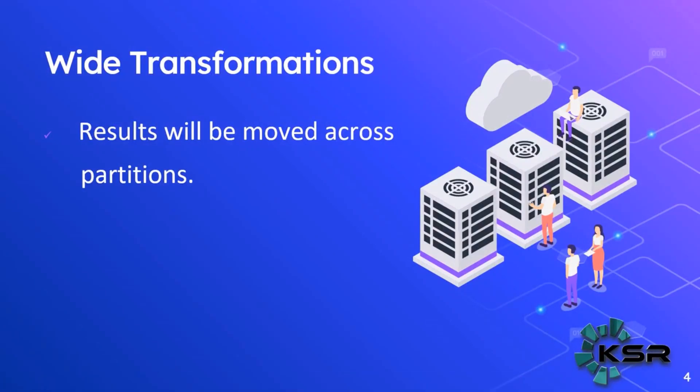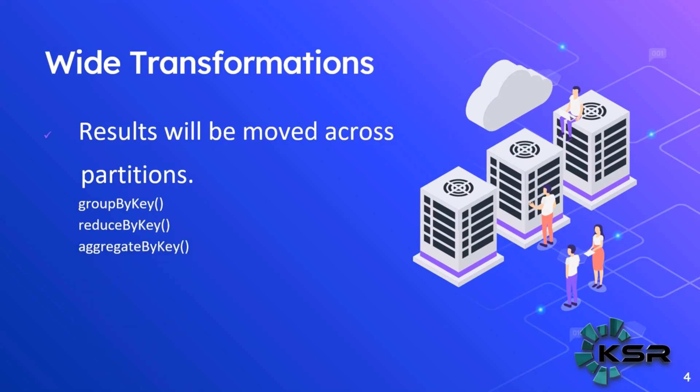The other type is wide transformation. Wide transformation means the results will be moved across partitions. Examples of wide transformations available in PySpark are: groupByKey, reduceByKey, aggregateByKey, sortByKey, join, cogroup, and many more. When there is any shuffle of data between partitions or nodes, that is called a wide transformation.